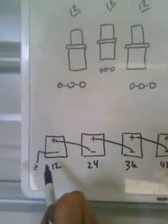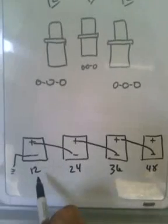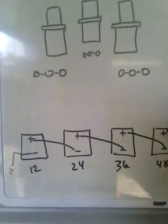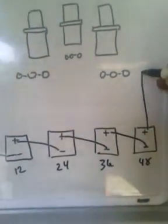And like I said, what that's doing is upping the voltage every single time. It's going from 12, 24, 36 to 48. From this 48 voltage, you'll come out, go to your solenoids.